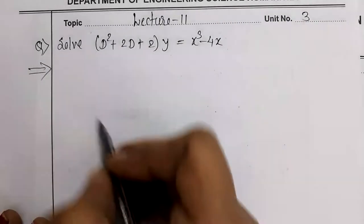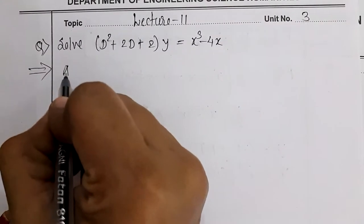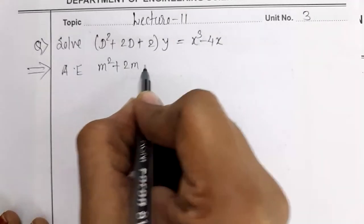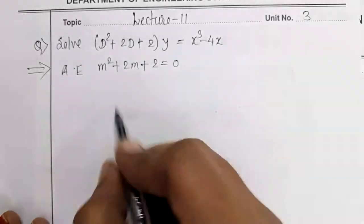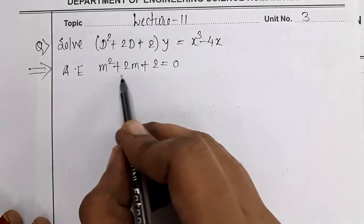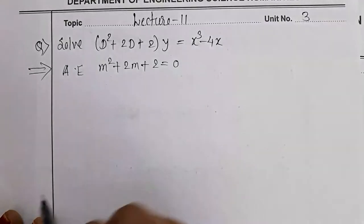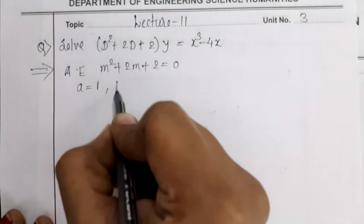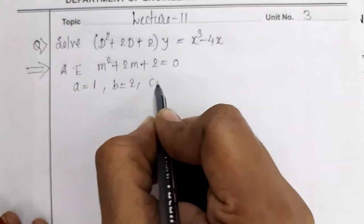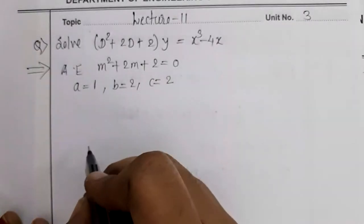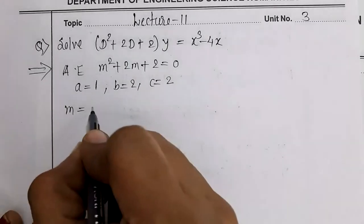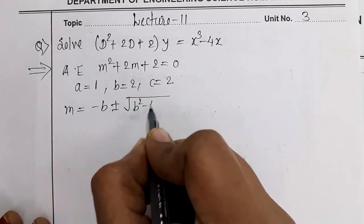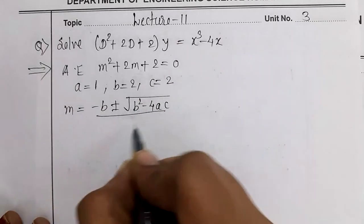First we find the complementary function (CF). To find CF, the auxiliary equation is m² + 2m + 2 = 0. Observing carefully, we identify a = 1, b = 2, and c = 2. The formula is m = (-b ± √(b² - 4ac)) / 2a.